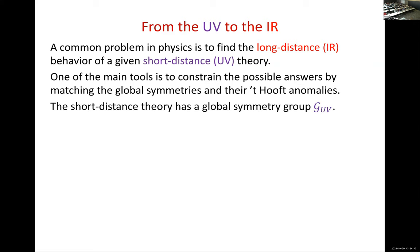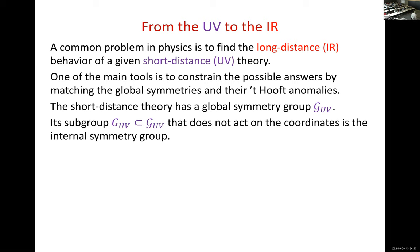Let's do a little bit of group theory. The short-distance theory has a global symmetry group G (script G), and that includes internal symmetry, space symmetries, etc. It has a subgroup — without the script — defined by the fact that it does not act on the coordinates; by definition, that's the internal symmetry of the problem. The translations, the rotations, and all that is not a subgroup of G_UV, but rather a quotient of the total group by the internal symmetry group, and as such it would be ambiguous — different people might use different definitions.